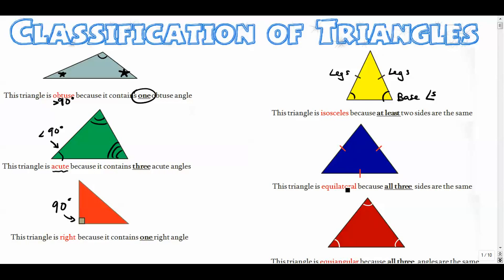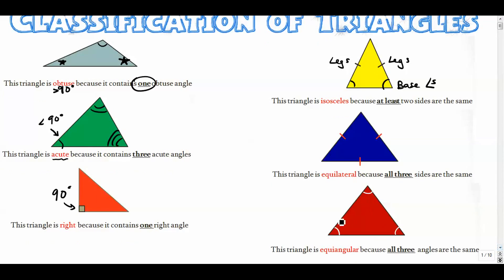This one right here is what we call an equilateral triangle — all three sides are the same. You can tell that because of the tick marks: one, one, and one means they're all the same. That's a really special triangle. If that's the case, all the angles are the same as well, in which case we call it equiangular. So when all the sides are the same, all the angles are the same as well — they go hand in hand.